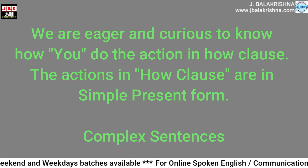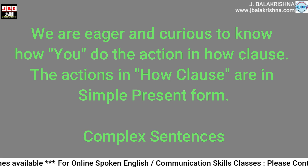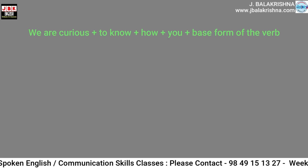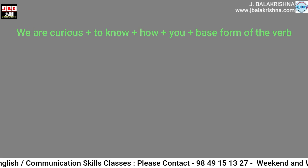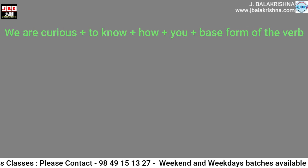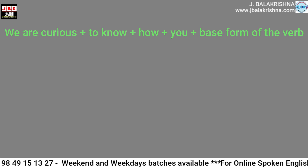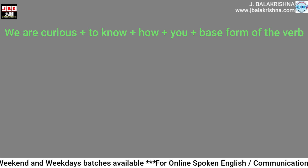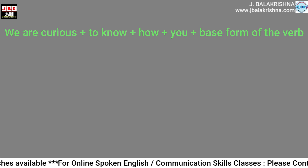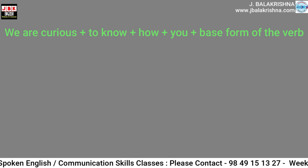All these sentences are called complex sentences in English grammar. The sentences are formed as follows: We begin with 'We', followed by the auxiliary verb 'are', then the adjective 'curious', plus 'to know', plus 'how', plus 'you', then the base form of the verb.